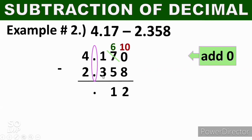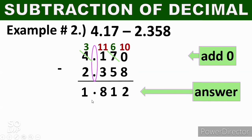Next, 1 minus 3 — we can't subtract, so we borrow 10 from 4, giving us 11, and 4 becomes 3. So 11 minus 3 equals 8. And 3 minus 2 is 1. Therefore, the difference is 1.812. That is how to subtract decimals.